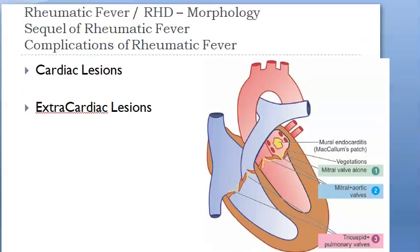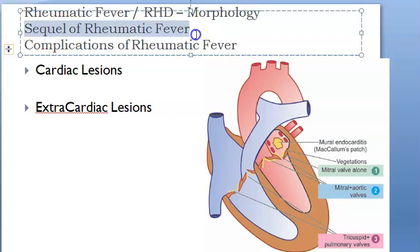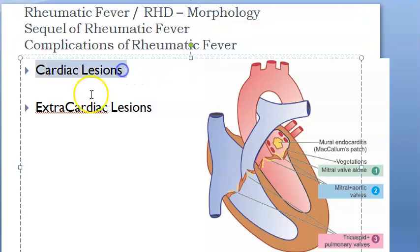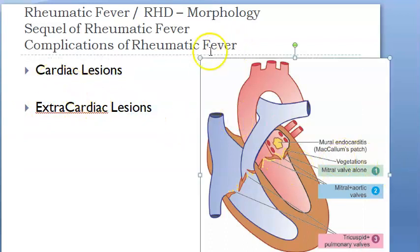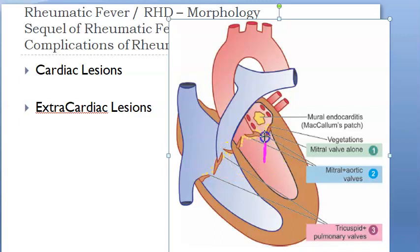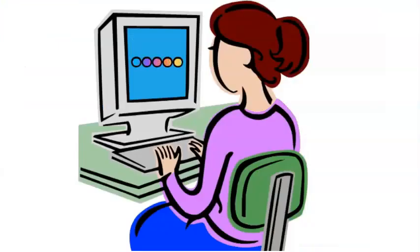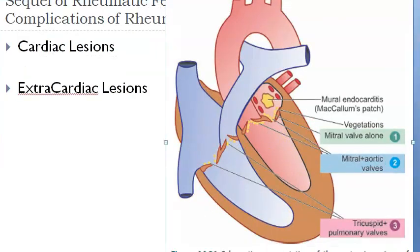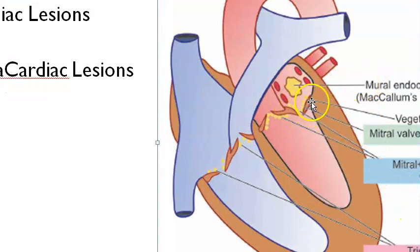Now moving to rheumatic heart disease — it is a sequel and complication of rheumatic fever. There will be cardiac and extra-cardiac lesions. Cardiac lesions involve deposits on the tricuspid, pulmonary, aortic, and mitral valves. The pulmonary valve is least affected; the mitral and aortic valves are mainly affected. Vegetations are deposited on the valves, particularly visible on the mitral valve.